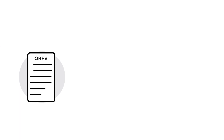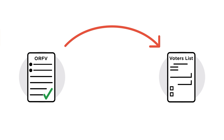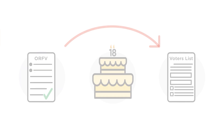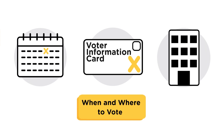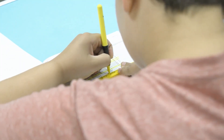By adding yourself to the Ontario Register of Future Voters, you will automatically be included on the voters list when you turn 18. If you are on the voters list, you will receive a voter information card telling you when and where to vote during provincial elections. This makes your voting experience easier and faster.